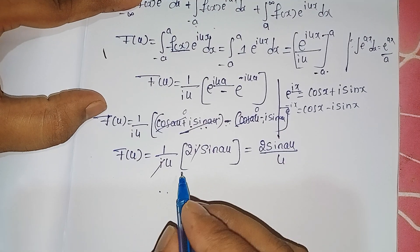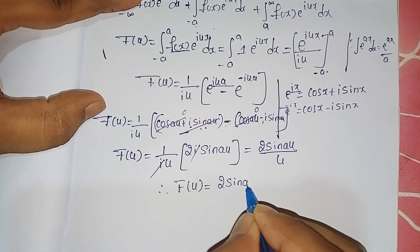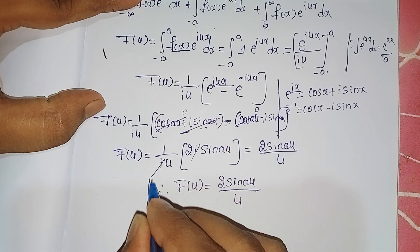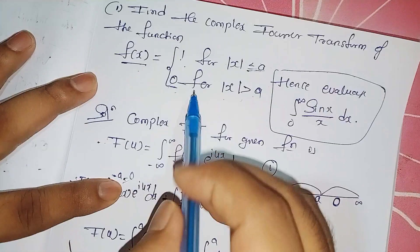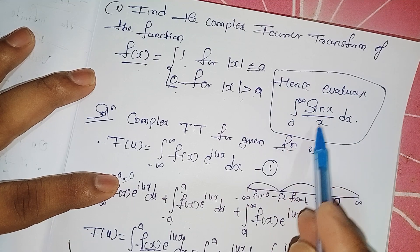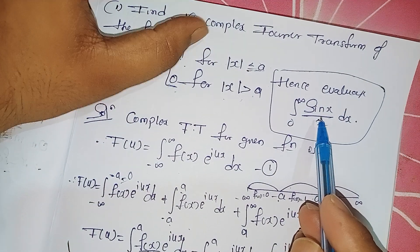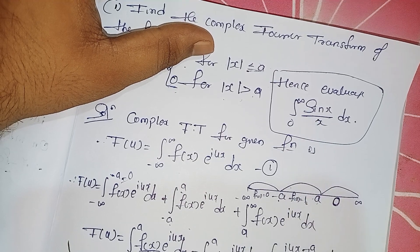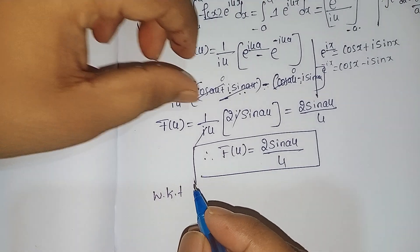So F(u) = 2 sin(au) / u. Whenever you get the answer it should be highlighted in a box. This is one part of the solution. Next we have to evaluate the integral, which is in terms of x. In Fourier transform or inverse Fourier transform, to get an answer in terms of x we apply the inverse Fourier transform to F(u).